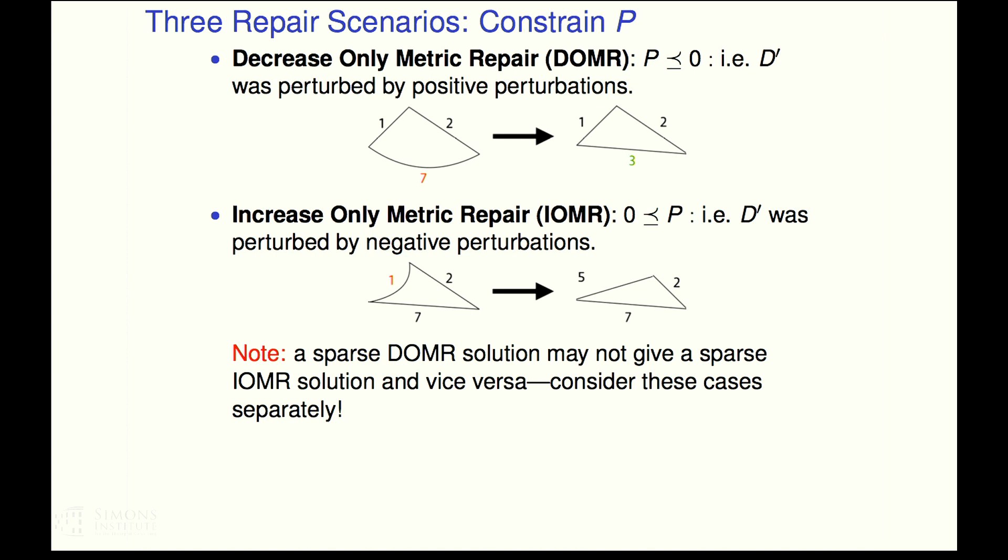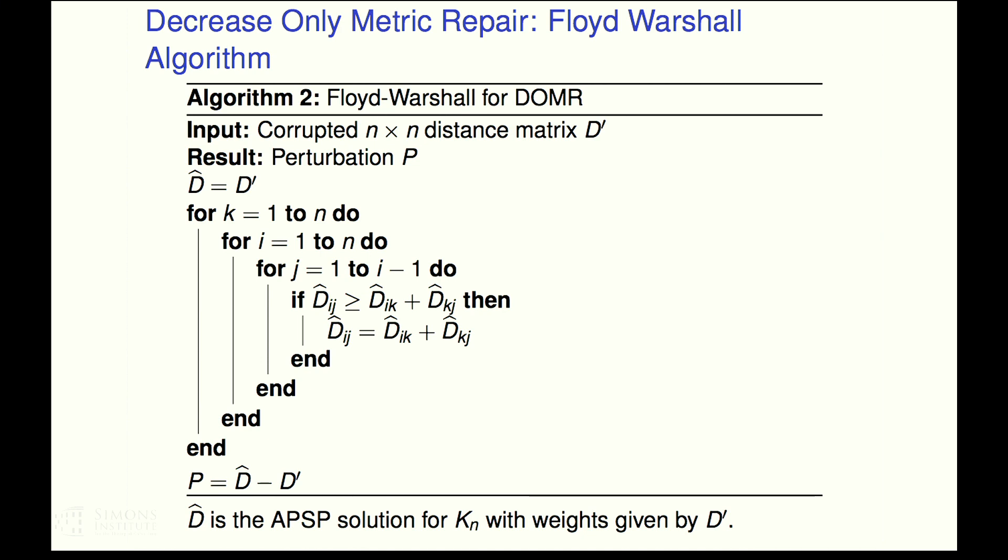Where we are allowed only to decrease. Where we are allowed only to increase. And then there's the general situation. Where we don't place any restrictions on our perturbation. One, two, seven could go to four, two, five.